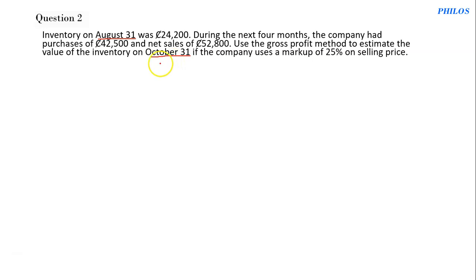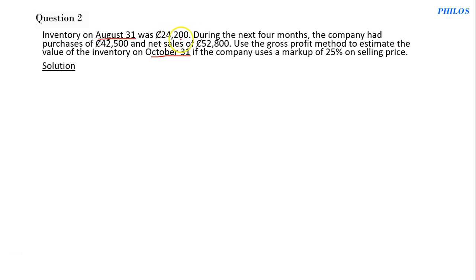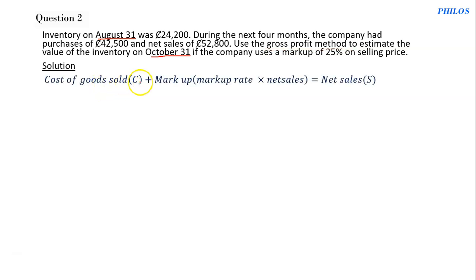August 31st is the beginning inventory and we want to find the ending inventory on October 31st. We know the beginning inventory and the purchases, but we do not know the cost of goods sold. We need the cost of goods sold to get the value of the ending inventory using the gross profit method.